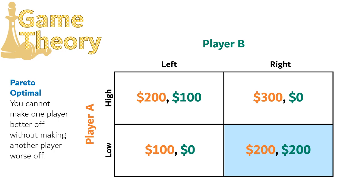Look at high right — it is possible to make player B better off at the other outcomes, but player A is worse off at those outcomes. So there is no way to make one player better off without making another player worse off, which makes this Pareto optimal. When searching for Nash Equilibria, you look at things from each player's perspective in isolation. When searching for Pareto optimal outcomes, you take the view of an onlooker who has taken the oath to make changes that do no harm.